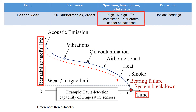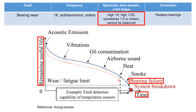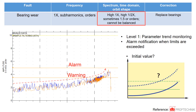As bearings wear out, the machine tends to emit noise. The graph below illustrates the time on the x-axis and the useful life of the bearing on the y-axis. As you could see from this figure, detecting the bearing wear before failure is crucial. Vibration tends to trend upward over time, and if the large vibration is due to bearing wear, typically it cannot be fixed by balancing.